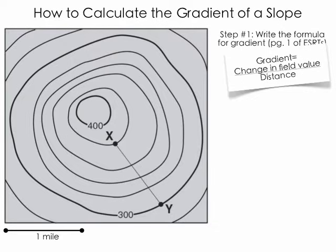Now, in the case of a topographic map, the field value refers to the elevation. So we're looking at the difference in elevation between the two points, and we're going to take that and divide it by the distance between the two points.